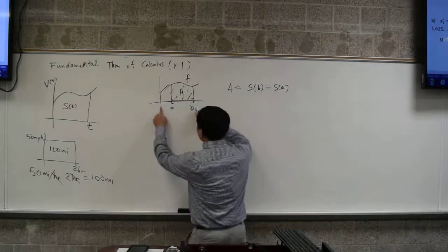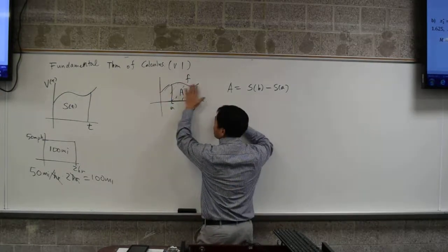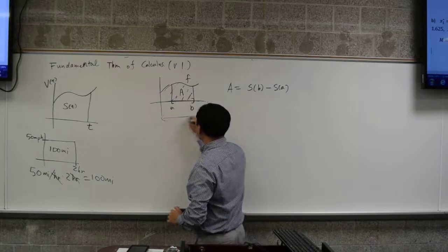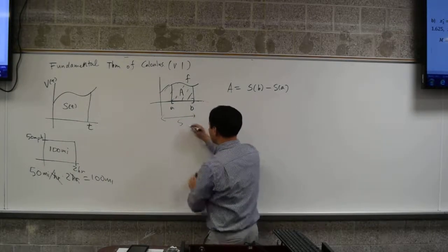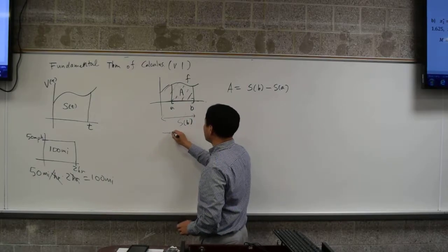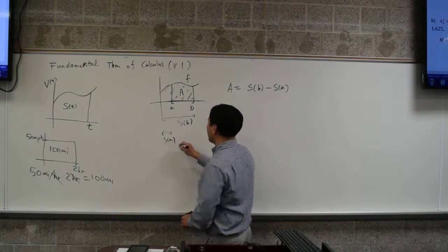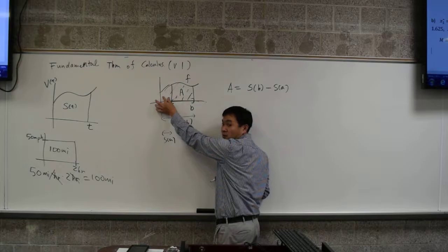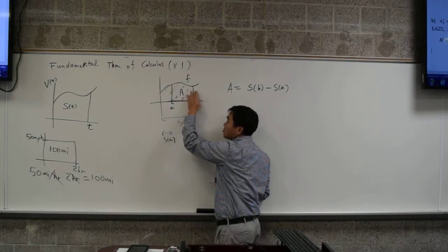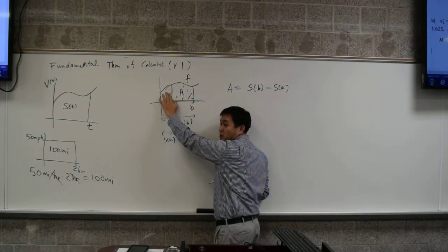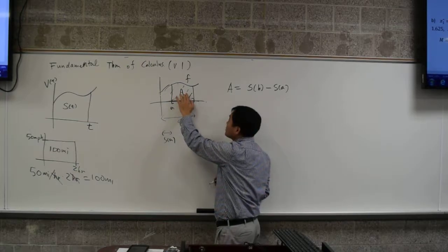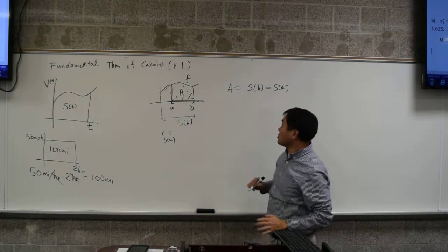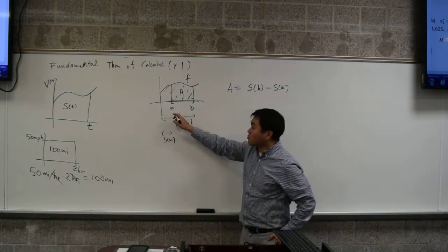Then, we know that this area would be s at b minus s at a. Why is that? Well, s at b is 0 to b, so it's this much. This much is s evaluated at b. And this much is s evaluated at a. Right? This area here. So, if you have this much minus this area, what are you left with? This one. This one.